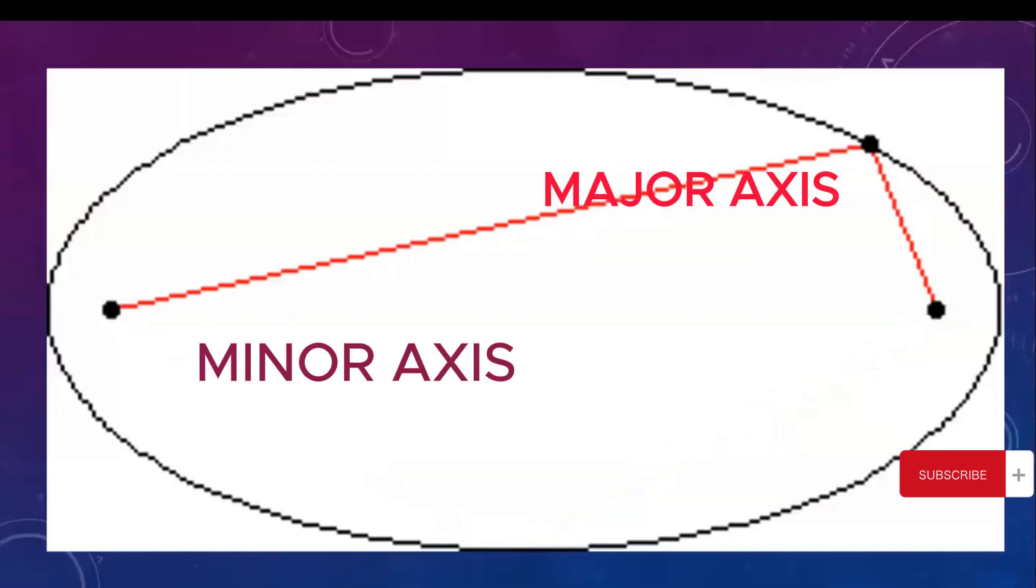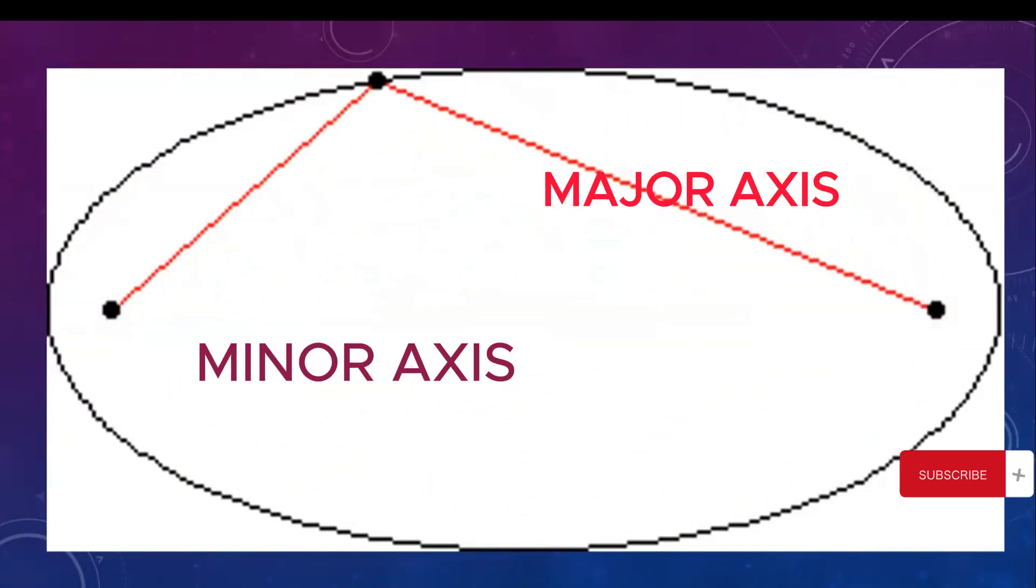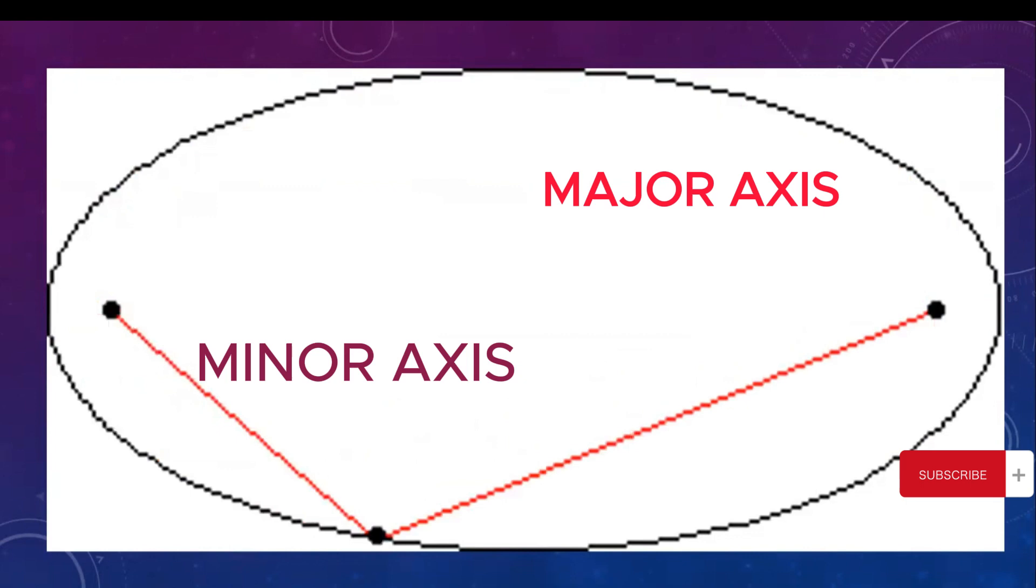Major and minor axis: the longest diameter of the ellipse is called the major axis. It runs through the center of the ellipse and connects the two foci. On the other hand, the shortest diameter of the ellipse is called the minor axis. It is perpendicular to the major axis and also connects the two foci.